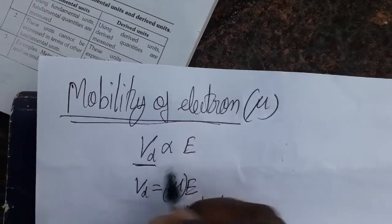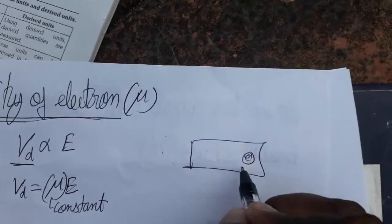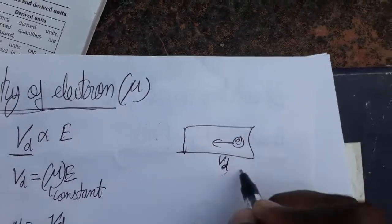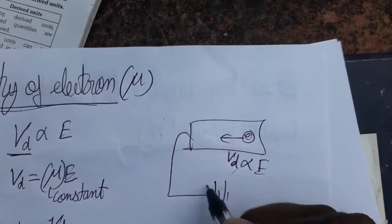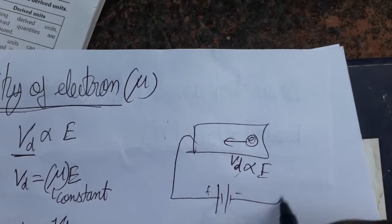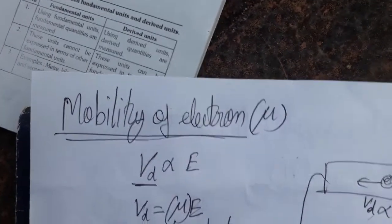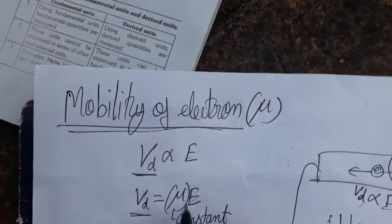So drift velocity is directly proportional to the electric field when the electron is moving in a conductor. That means how much electric field you applied — drift velocity is directly proportional to the electric field, so drift velocity is equal to a constant times the electric field.